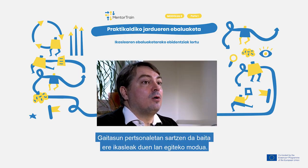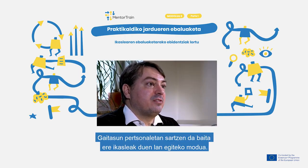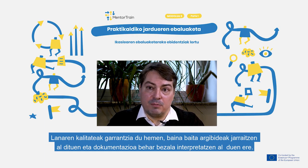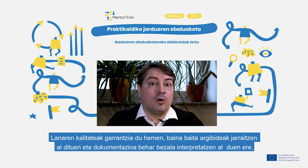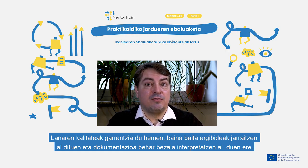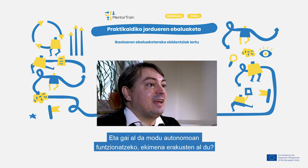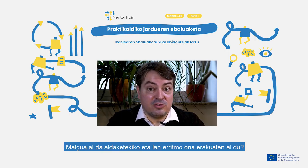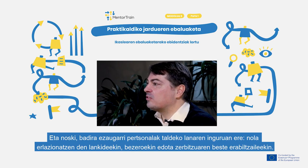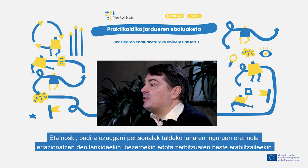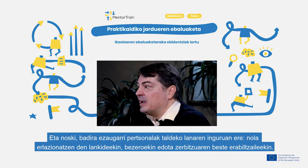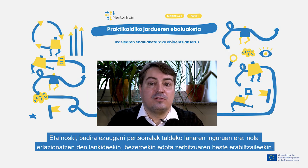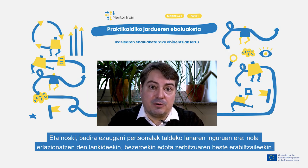Personal abilities also include the way the apprentice performs their work. The quality of work is important here, but for example also if they follow instructions and interpret documentation correctly. And can they work autonomously, show initiative, are they flexible to change and have a good work pace? And of course there are personal attributes around teamwork and how the apprentice relates to colleagues, customers, service users and other relevant people.